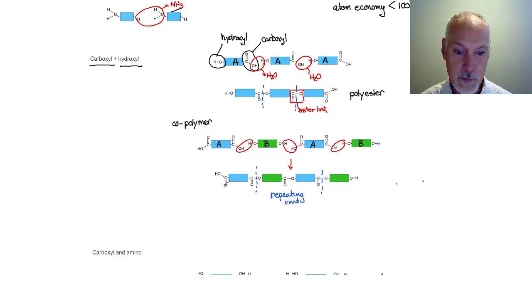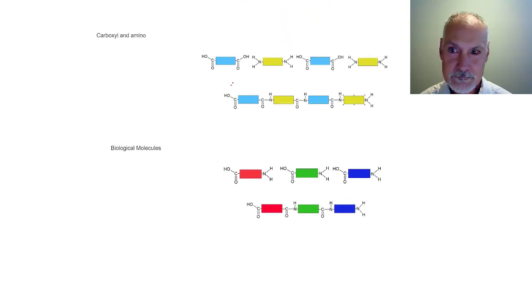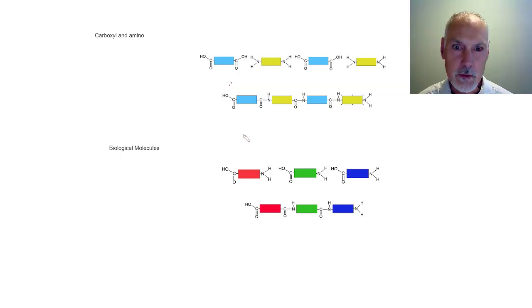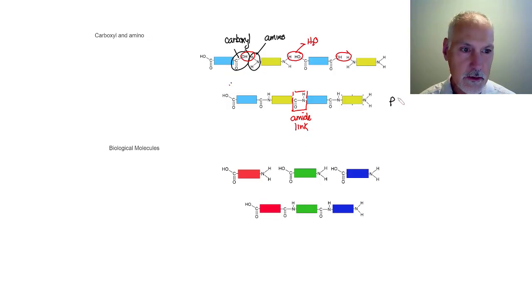Let's look at some other functional groups that can be employed here. We can also use carboxyls and amino groups. So, let's identify them in our molecule. There's our amino group and our carboxyl. From condensation, there's the water molecule we'll produce. There's another one, and there's another one. The resulting pattern now gives us this group in here. This is called an amide link. And we've created here something called a polyamide.